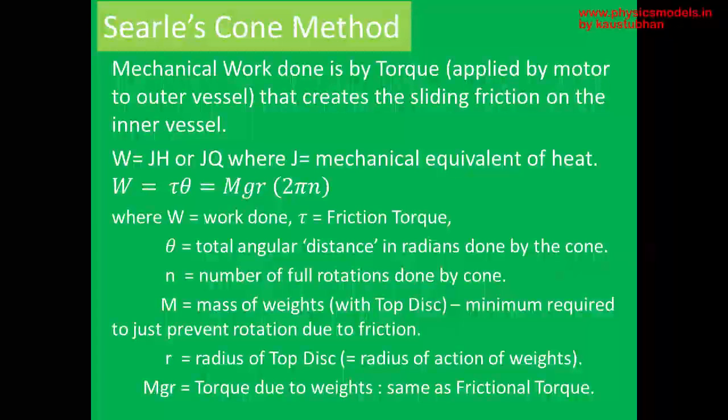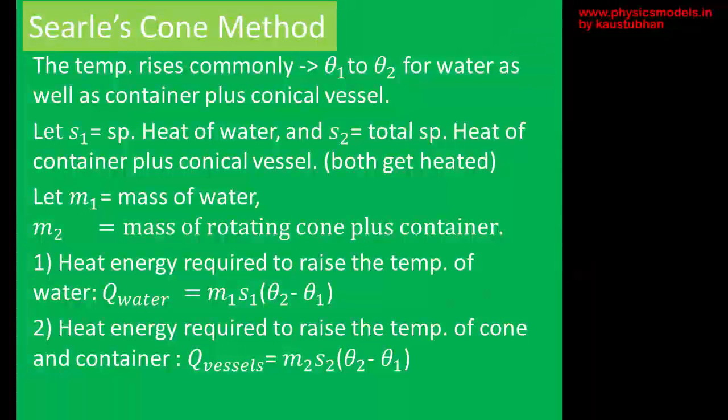So, MgR is the torque, and the torque is due to the weights, and the weights that we put was just sufficient to balance the frictional force that the cone exerted. So, instead of using the frictional force formula, we are using the mass into gravity as the weight into the radius of action, which is the radius of the torque plate.